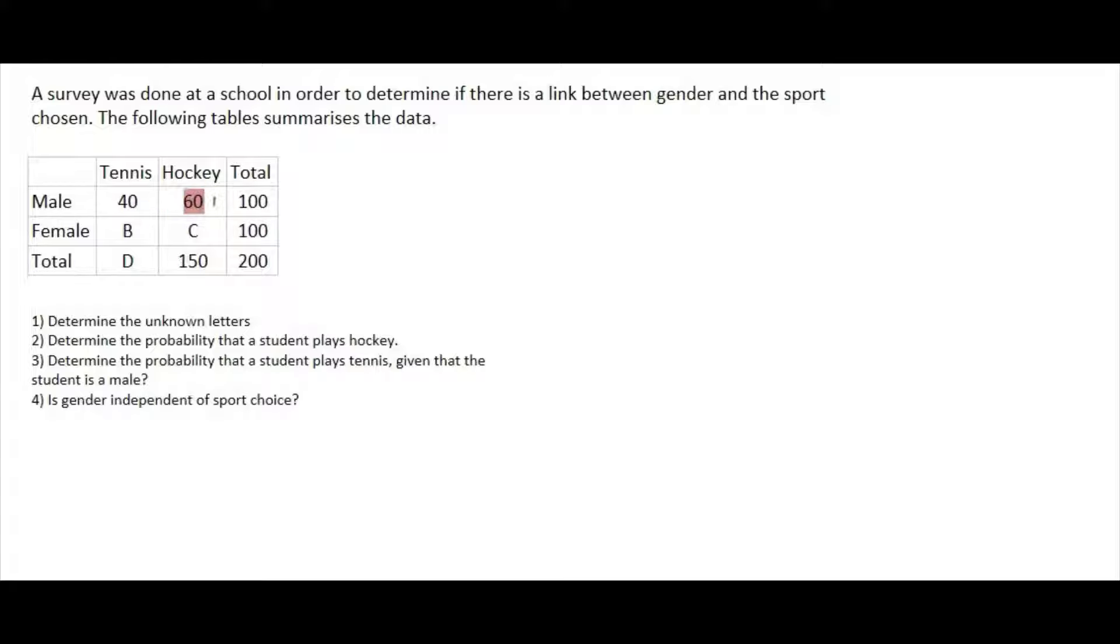And then if we look down the hockey column, well, they tell us that the total of hockey is 150. And so if we say 150 minus 60, then that means C would be 90. That then allows us to calculate B, because we know that this column, if we go across, that has to end up being 100, and so B is 10. And then that will allow us to get D, because 40 plus 10, well, that means that D's total is 50.